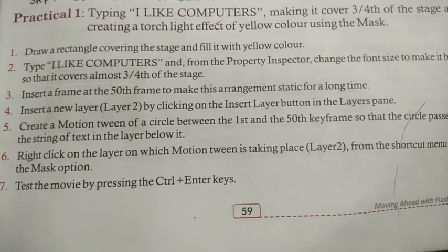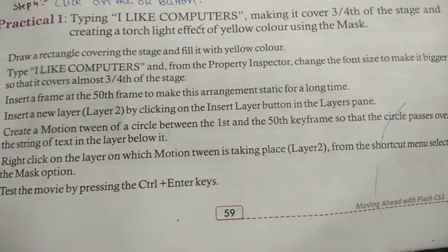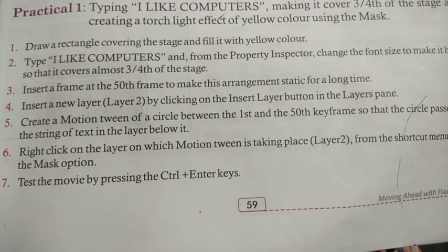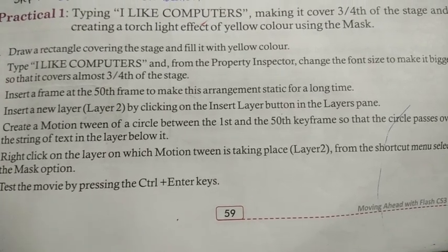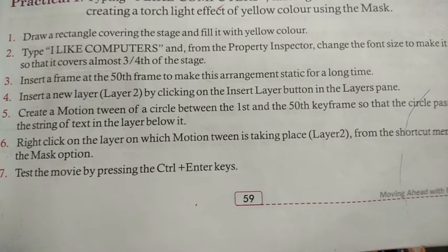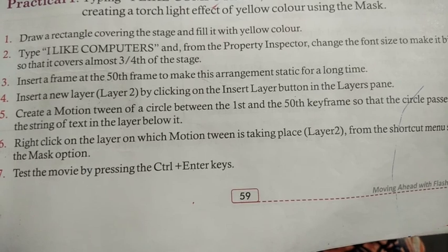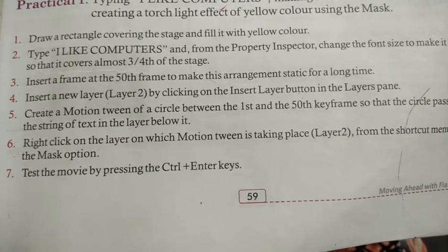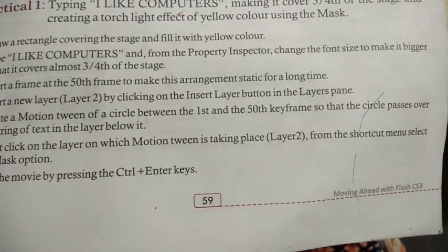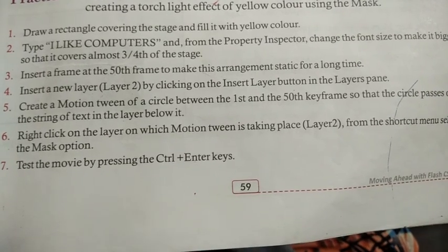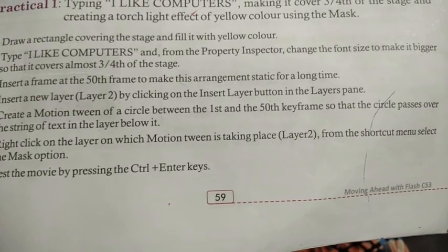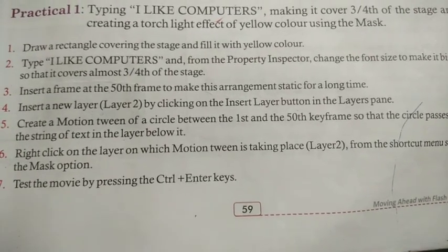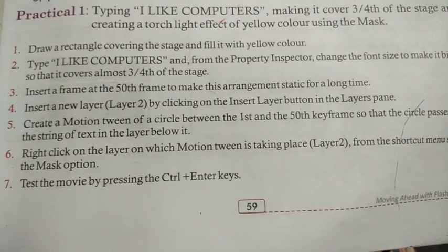Practical number one: typing 'I like computer', making it cover three-fourths of the stage, and creating a torch light effect of yellow color using a mask. Draw a rectangle covering the stage and fill it with yellow color. Type 'I like computer' and from the property inspector change the font size so it covers almost three-fourths of the stage. Insert a frame at the fifth frame, insert layer two, create a motion tween of the circle between the first and fifth keyframe so the circle passes over the text. Right-click layer two and select the mask option. Test the movie by pressing Ctrl plus Enter.